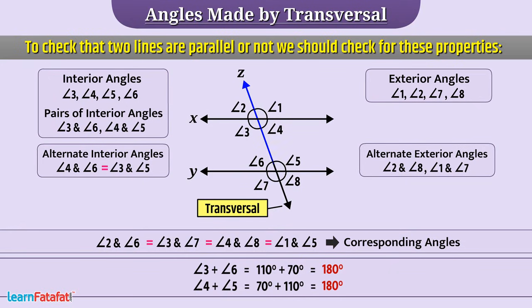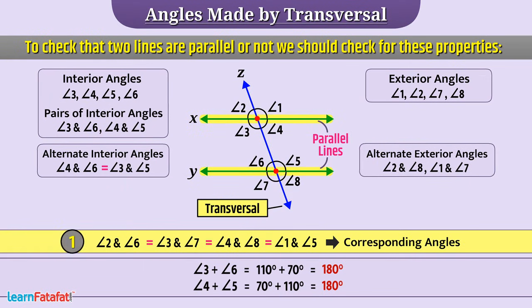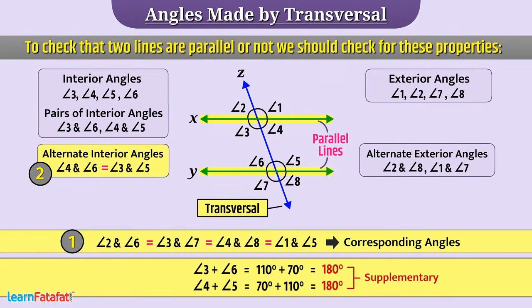If a transversal intersects two lines so that each pair of corresponding angles are equal, then the lines are parallel. Similarly, if each pair of alternate interior angles are equal, then the lines are parallel. If each pair of interior angles on the same side of the transversal are supplementary, then the lines are parallel. I hope that you have understood the concept very well.